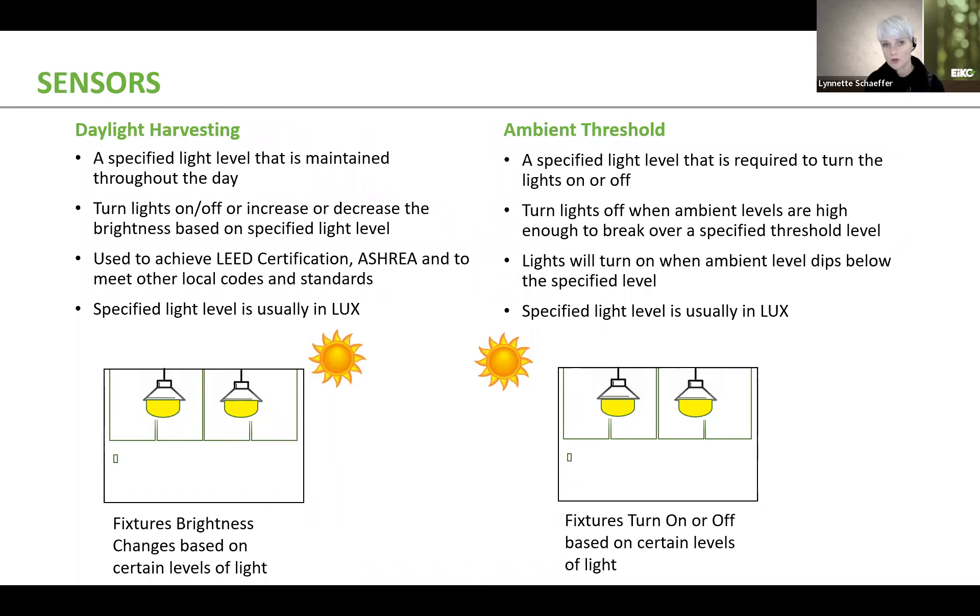That is very much unlike ambient threshold. Ambient threshold, on the other hand, looks for a specified light level that is programmed, and then turns the lights on or off. They will not fluctuate the intensity of the light level. It'll either be on or it will be off.